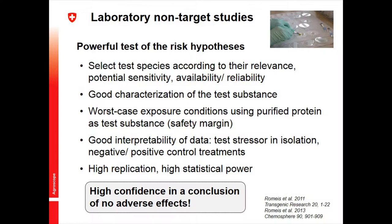Laboratory non-target studies provide a very powerful test of the risk hypothesis for five major reasons. First, we can select test species that are relevant — representative of species in the receiving environment and most likely to be exposed to this stressor. We can also use knowledge about the toxin to select species most likely to be sensitive. As one colleague said, it's like looking for the black swan. If you have a BT maize producing a Cry3 toxin to kill beetle pests, predatory beetles are more likely to be adversely affected than a honeybee.